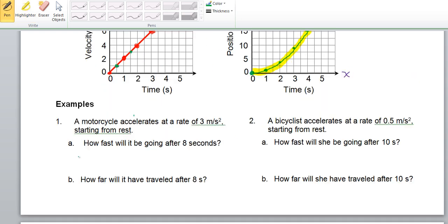Alright. Let's take a look at the example problem. Example one reads, a motorcycle accelerates at a rate of three meters per second squared starting from rest. A. How fast will it be going after eight seconds? So, how fast after eight seconds? We're going to be trying to find its final speed. And that's going to equal its initial speed plus its change in speed due to acceleration. Acceleration times time.